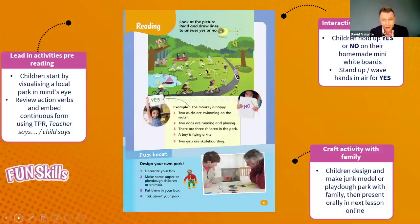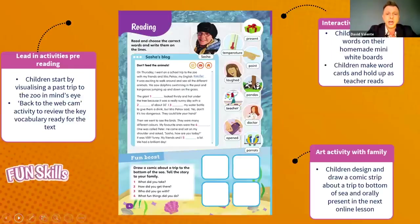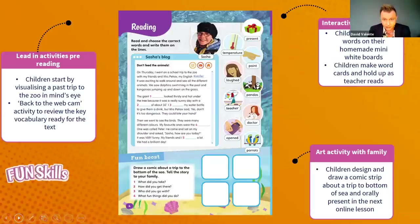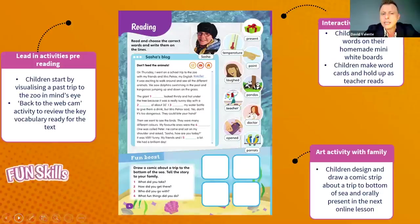Those are some ideas you can adapt for other reading activities at the pre-A1 Starters level. Moving on to the A1 Movers level: here we have 'Sasha's Blog,' a text all about the zoo — very child-friendly and in the child's world. Just as we visualized the park, similarly with the zoo the child will have either been to a zoo or seen one on TV. So that guided visualization is really useful. For the missing words — pandas, parrots, and so on — that classic 'back to the board' activity works well.